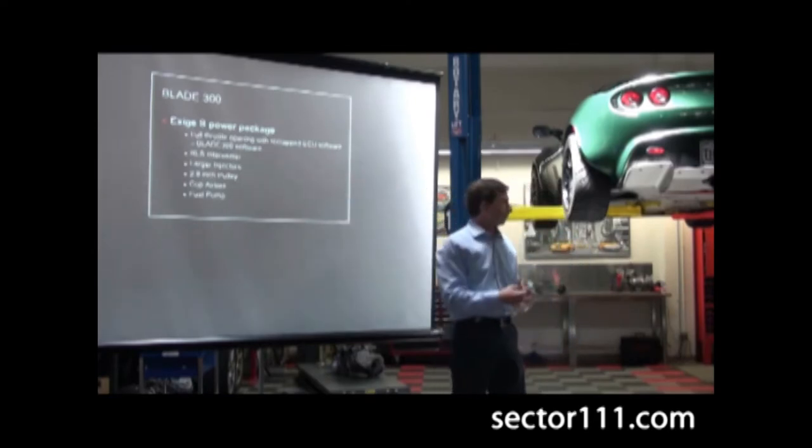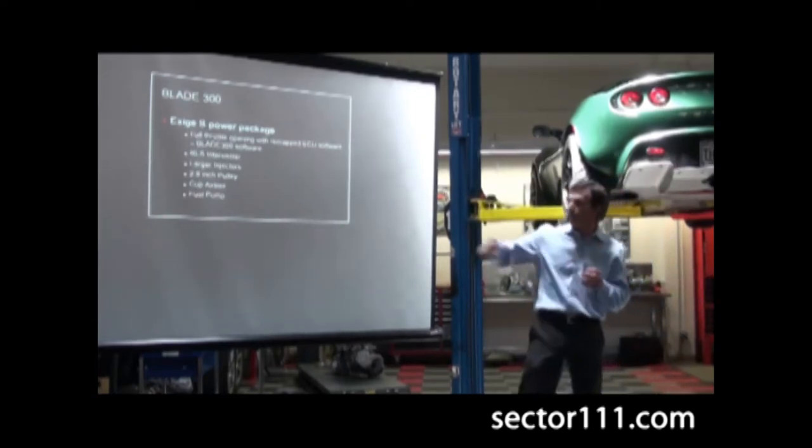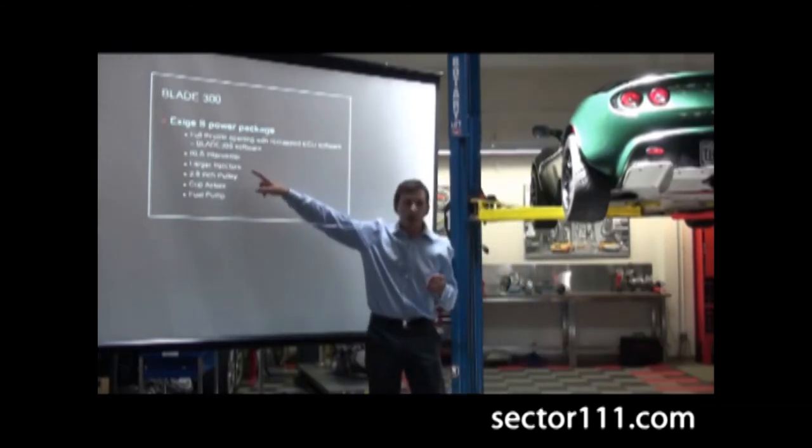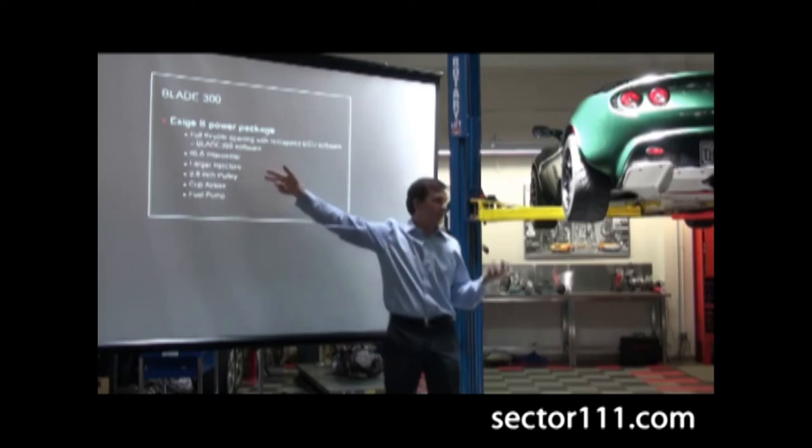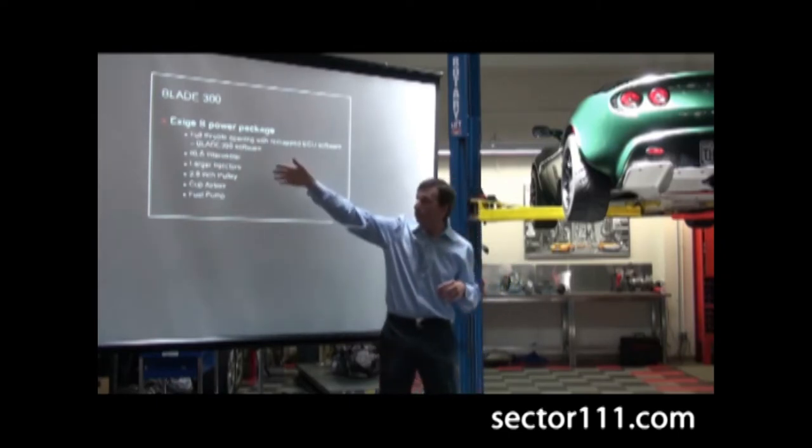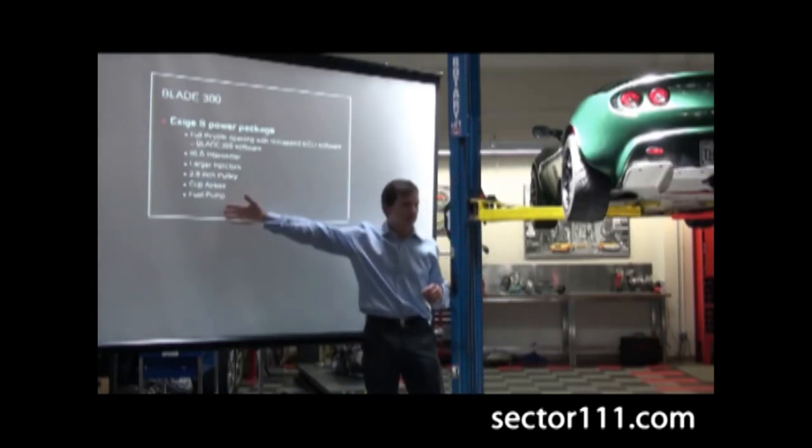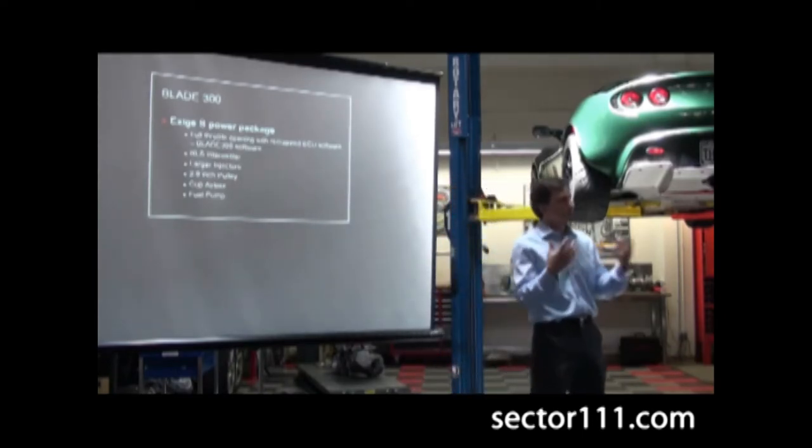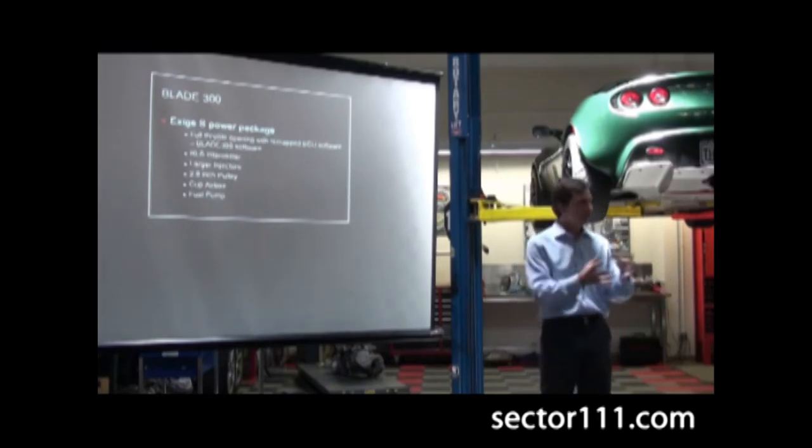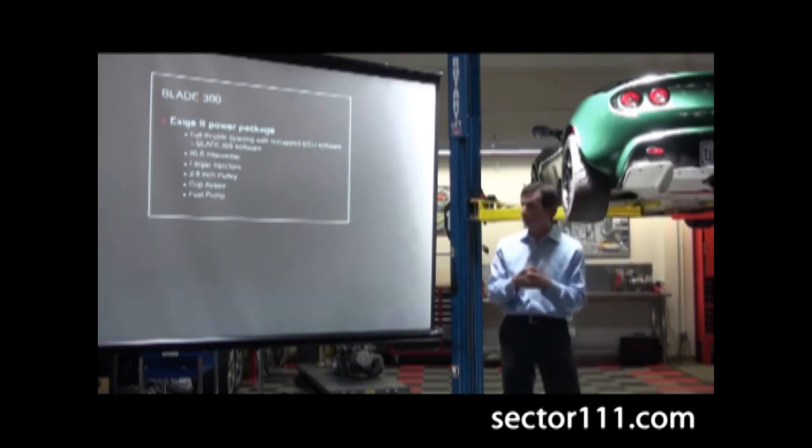We didn't want to limit it there so we went and made a Blade 300. The Blade 300 is the full throttle opening as much as it's got. It's got very similar parts: the RLS intercooler, larger injectors, and an even smaller pulley at 2.9 inch. This is really only possible with a big intercooler - it generates too much heat. You're spinning the supercharger too fast without a nice heat sink to take the heat out of it. It's also got the Cup air box, and we're requiring a fuel pump to go along with that just to bring the whole system up.